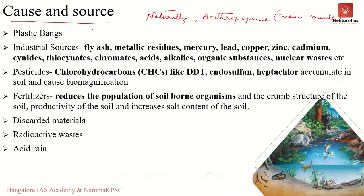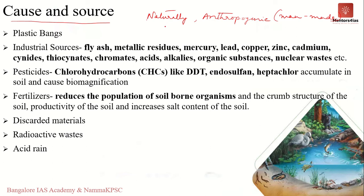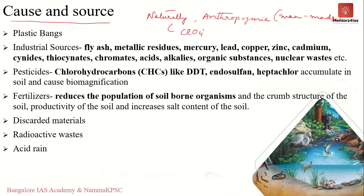Natural processes can also lead to accumulation of toxic chemicals in the soil. For example, consider the accumulation of high levels of perchlorate ions in soil from the Atacama desert in Chile. This is a type of accumulation due to a natural process in arid environments, and so soil pollution can also happen naturally.